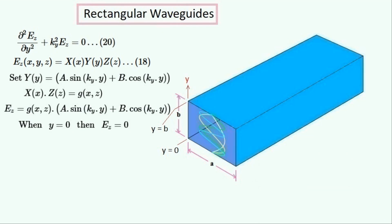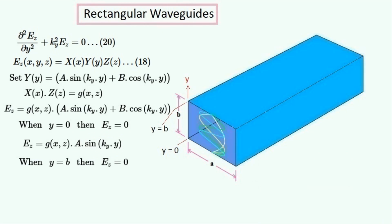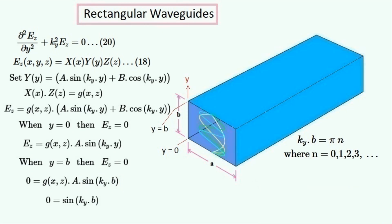We can couple the other functions of X and Z together and treat them as a single function G. So this is what EZ is equal to as a function of all three variables X, Y and Z. From the diagram we know that EZ is zero when Y is equal to zero because it is touching the bottom wall of the waveguide. So the function Y must be the sine function because if there was a cosine function included then it wouldn't be zero at Y equals zero. EZ is also zero when Y is equal to B because this is when it touches the top wall. Substituting all of these values in, the only term we can set to zero without making this equation permanently zero everywhere is the sine term. This sine equation is true when KY times B equals N times pi, introducing an integer N equal to any positive or zero integer. Solving this gives us the value for KY.